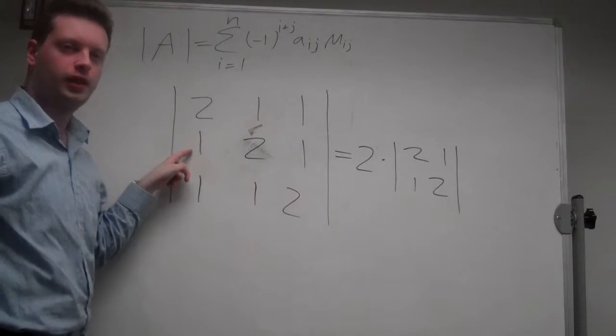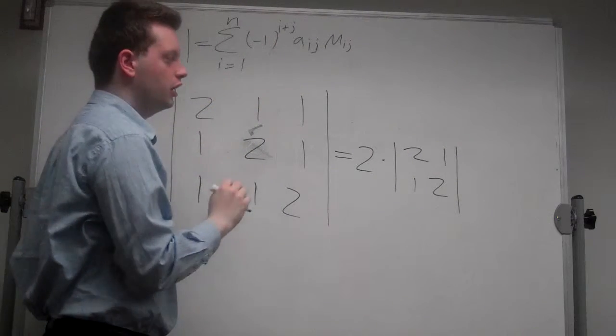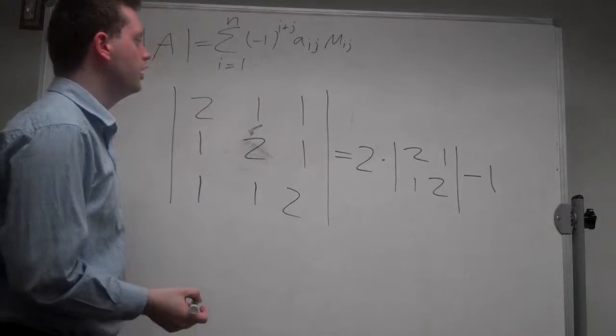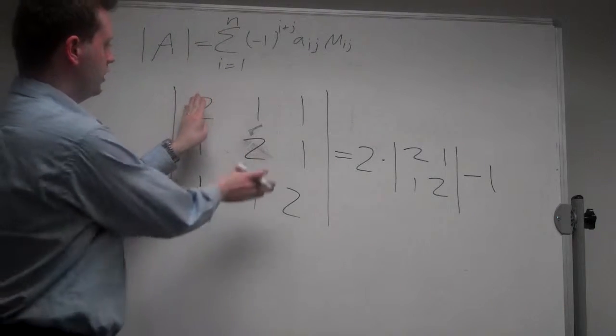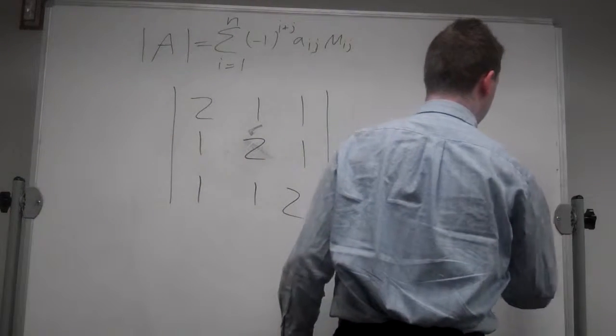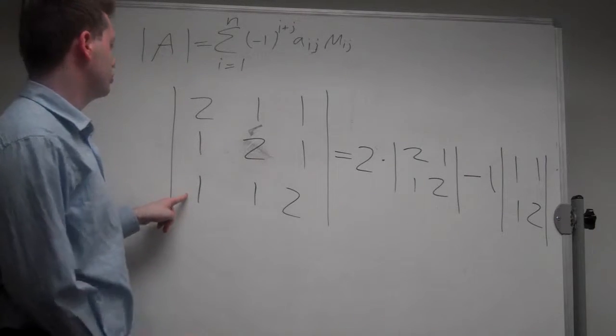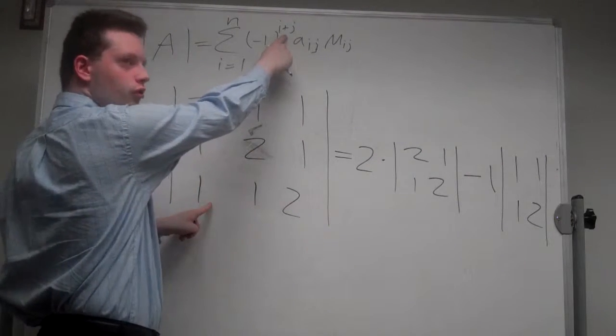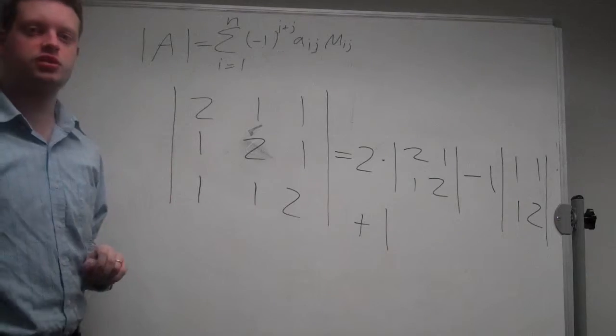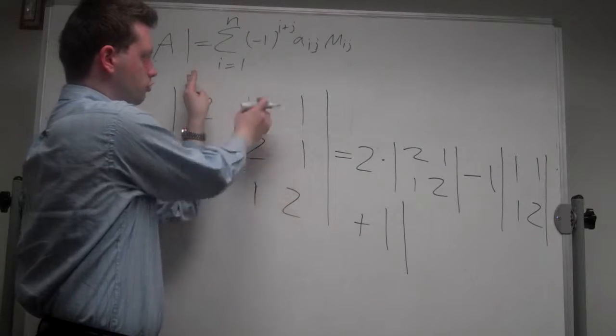The second element has indices 2 and 1, which sum to 3, so there's a minus sign. Minus 1 times the determinant of the matrix if we delete column 1 and row 2, which is [1, 1; 1, 2]. The last element has indices 3 and 1, summing to 4, an even number, so there's a plus. It's plus 1 times the determinant of the matrix if we delete column 1 and row 3, which is [1, 1; 2, 1].